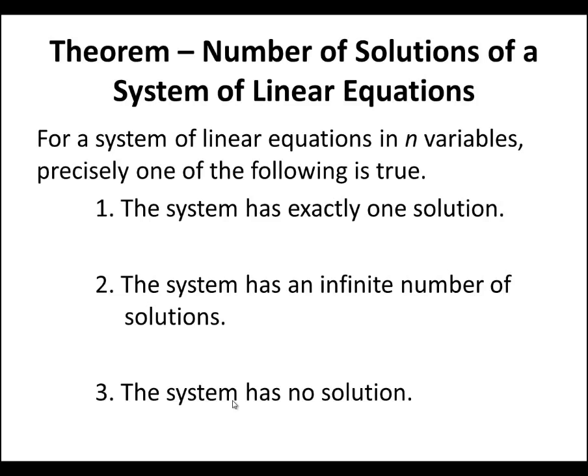Recalling what we've seen before — the number of solutions of a system of linear equations: given a system with n variables, precisely one of the following is true: the system has exactly one solution, the system has an infinite number of solutions, or it has no solution at all.